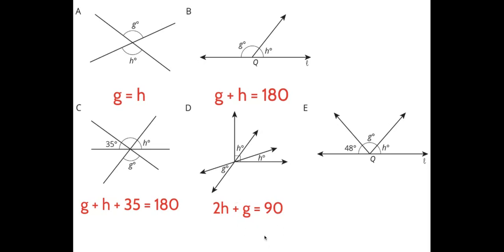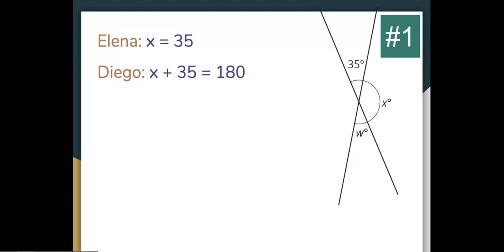For the last situation, we can see a straight line, so we know it's 180 degrees. These three angles are supplementary, so we add all three together to get 180. We conclude that G plus H plus 48 equals 180 degrees.